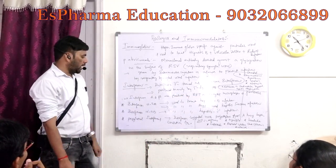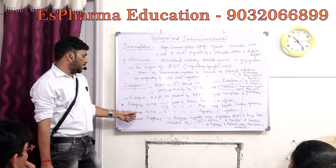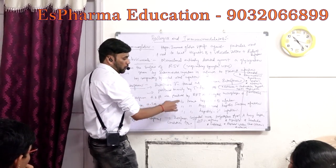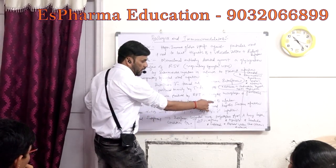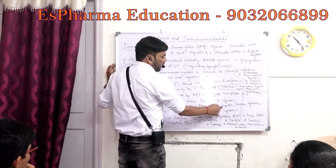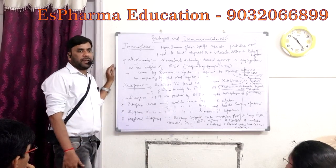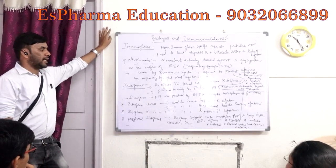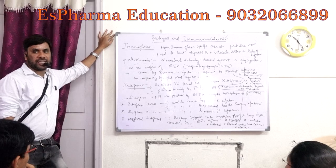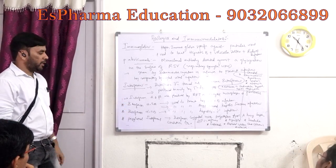We have another interferon called interferon alpha 2B. Interferon alpha 2A is used to treat Hepatitis B infection and AIDS-related Kaposi's sarcoma. Name the interferon used to treat AIDS-related Kaposi's sarcoma and Hepatitis B infection — the answer is interferon alpha 2A.